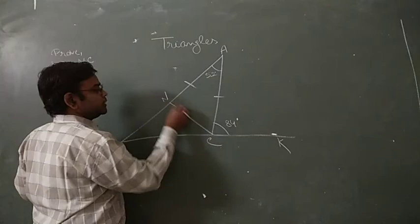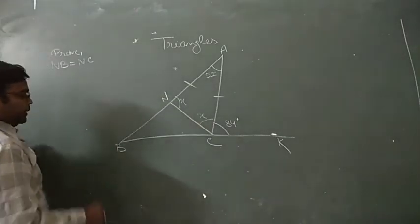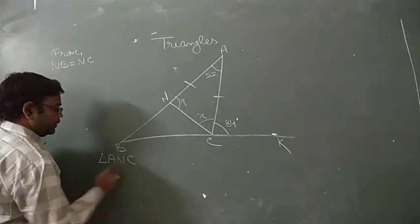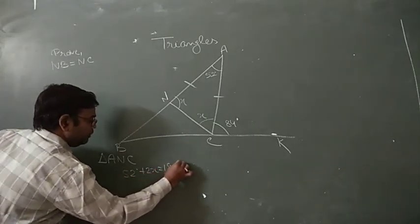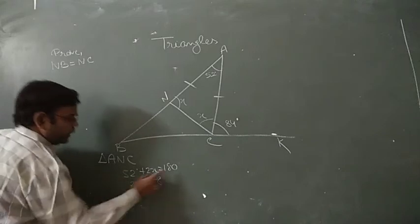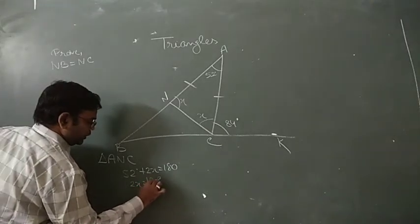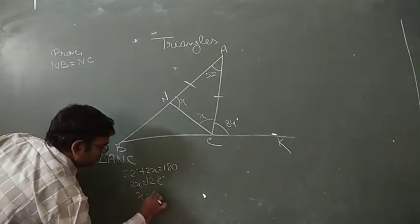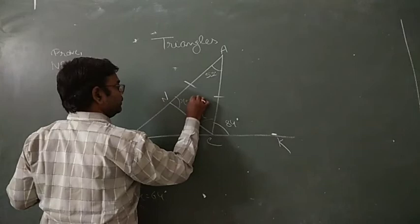Since triangle ANC is isosceles, if each base angle is x, then in triangle ANC: 52 plus 2x equals 180 degrees by angle sum property. So 2x equals 128 degrees, giving x equals 64 degrees.